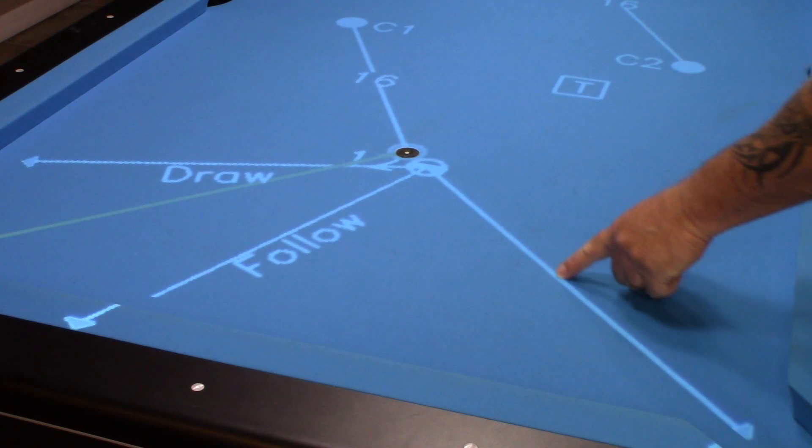That cue ball, I mean the object ball, is going to travel here, the cue ball is going to go into the other corner pocket.